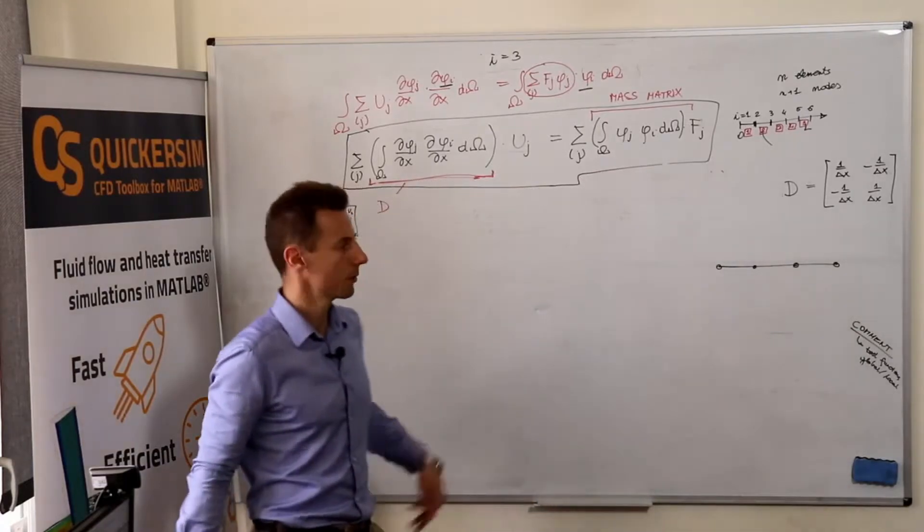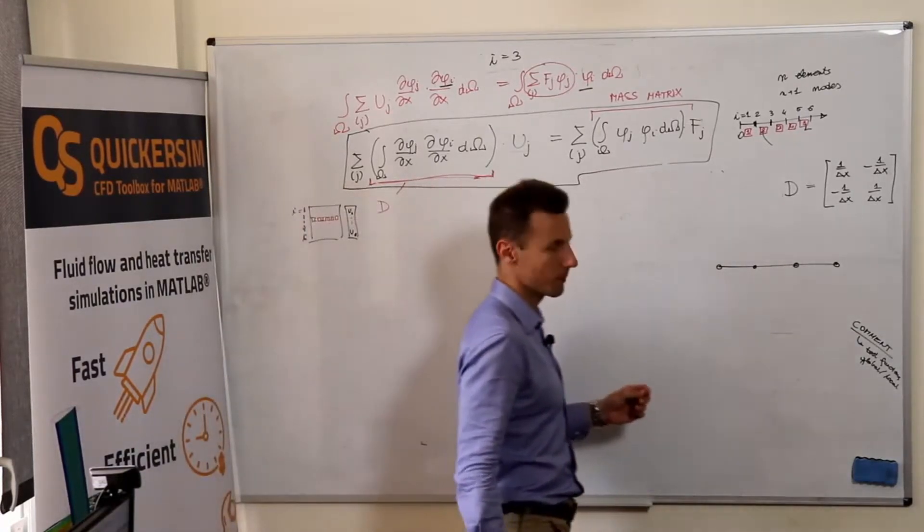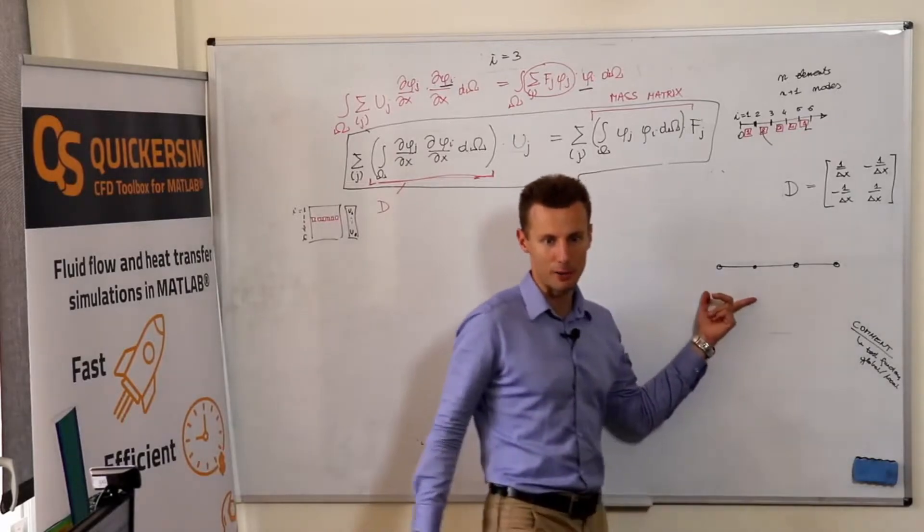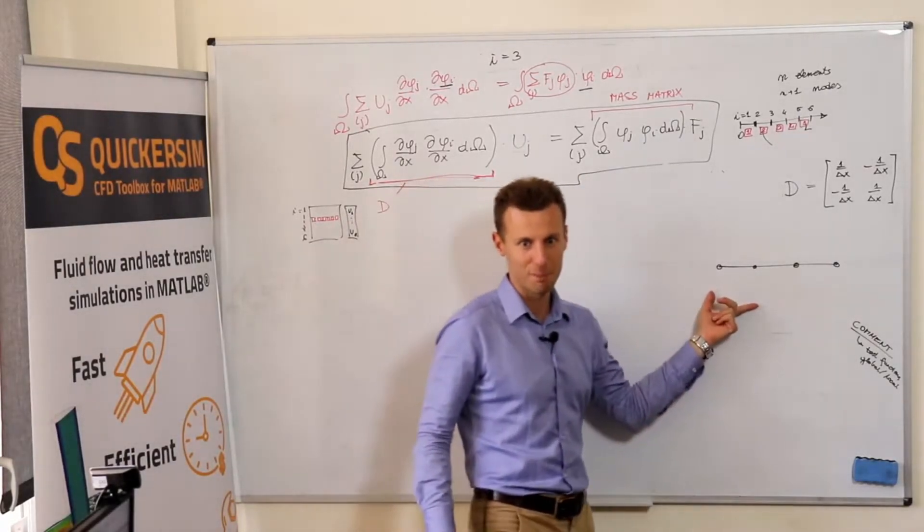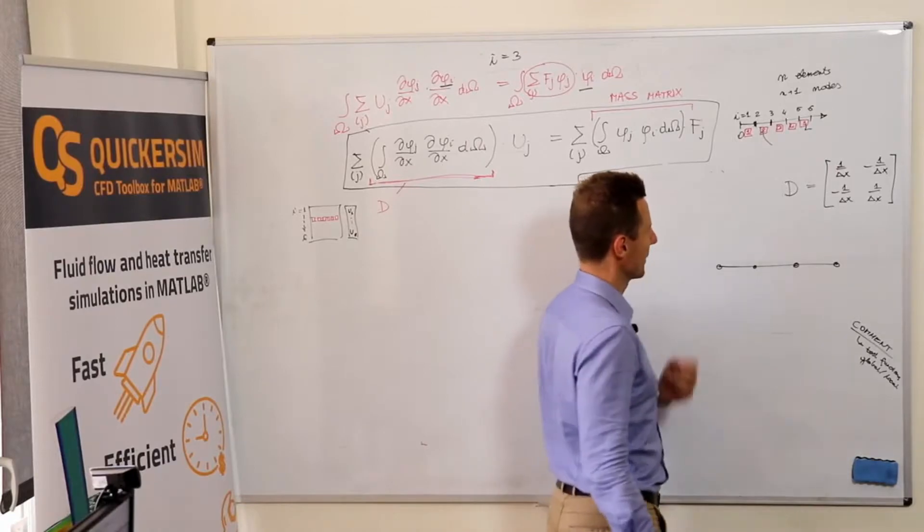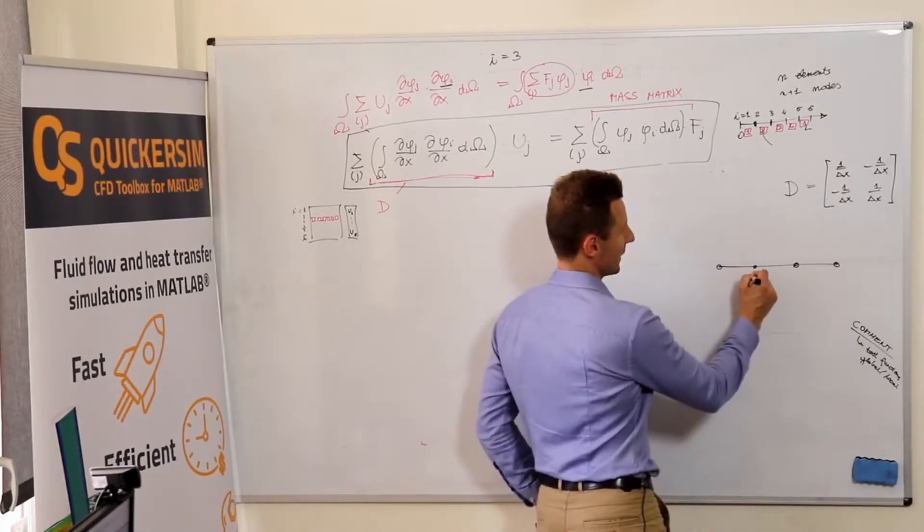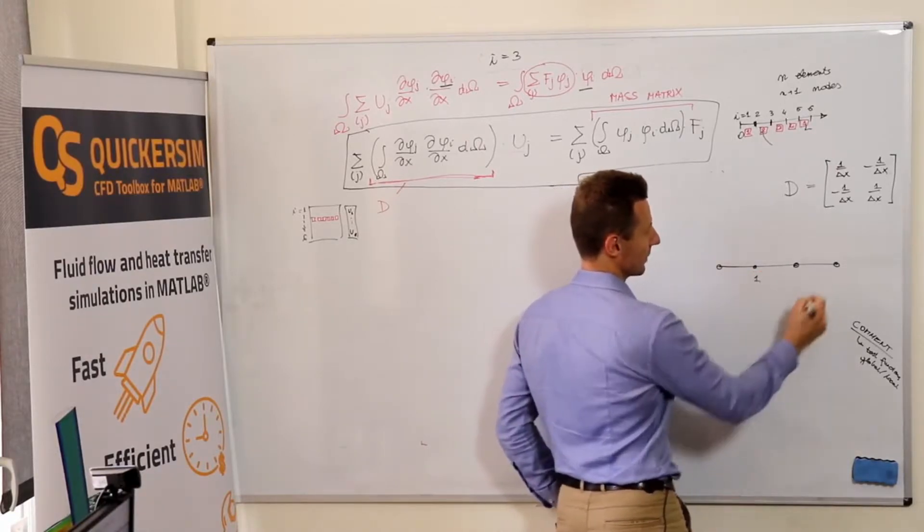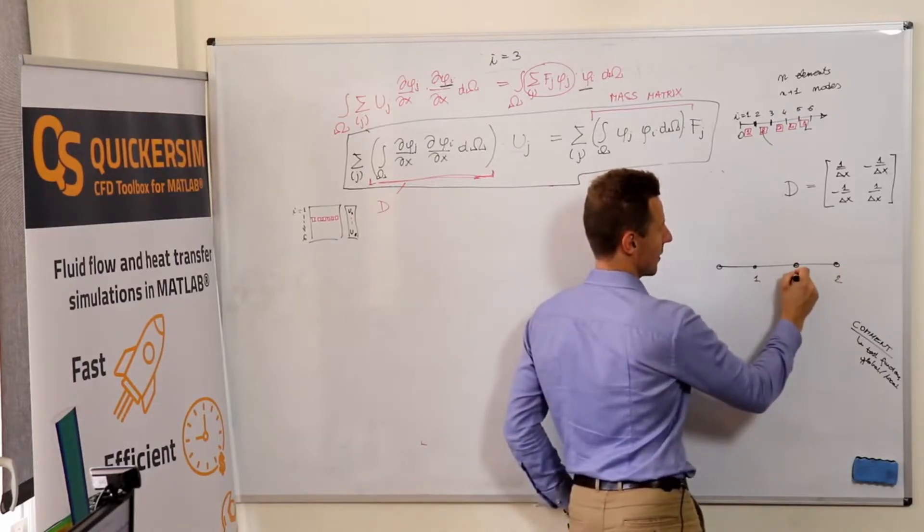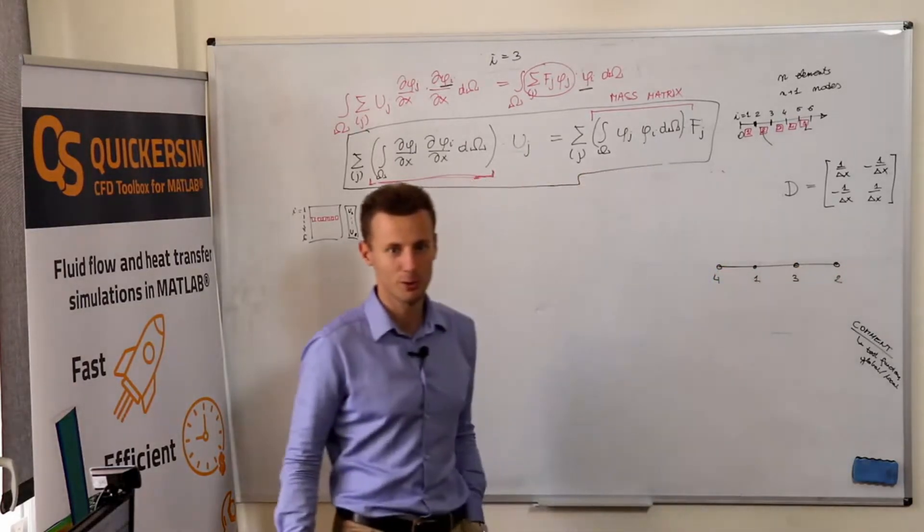And let's do it for such a mesh and let's make the mesh unstructured in 1D. The unstructured mesh in 1D would be the first node, the second, third, and fourth node.